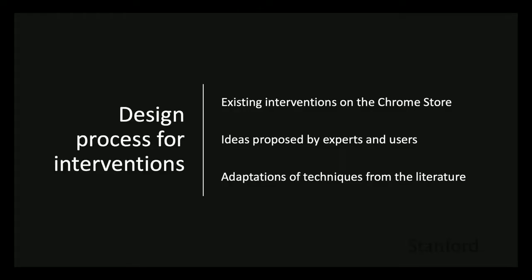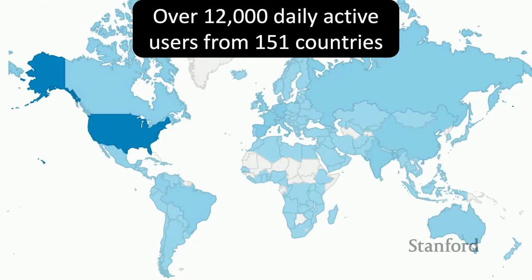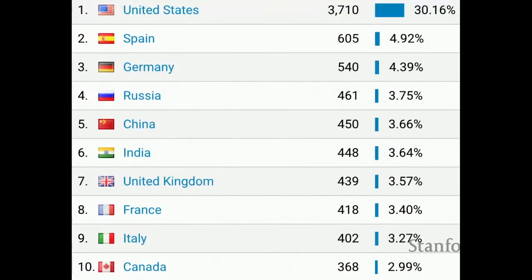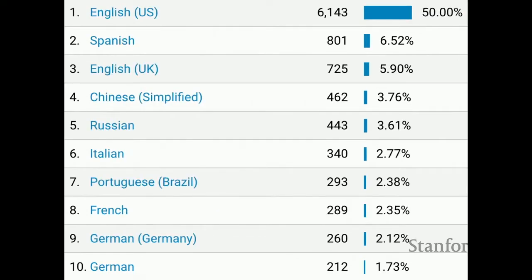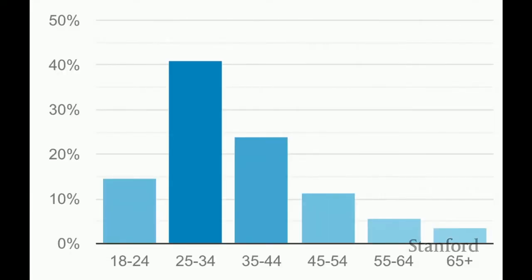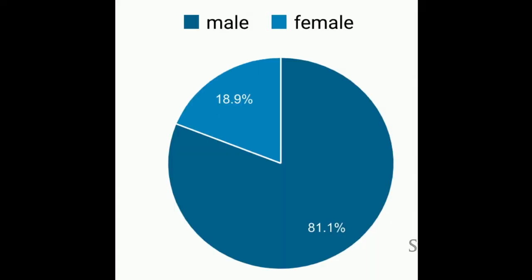The design process by which we arrived at these interventions involved looking at existing interventions on the Chrome Store and reimplementing them in HabitLab, incorporating ideas proposed by experts and users, and adapting techniques from the behavior change literature. We have over 12,000 daily active users from 151 countries. About 30% are from the United States, 50% prefer to use their browser in English, and the most represented age demographic is 25 to 34 years of age. Our users are also mostly male.